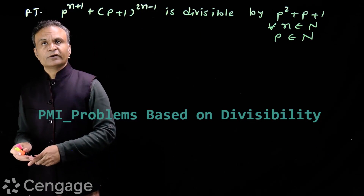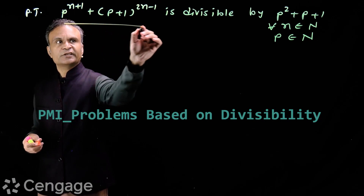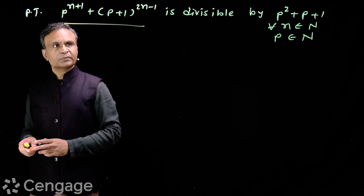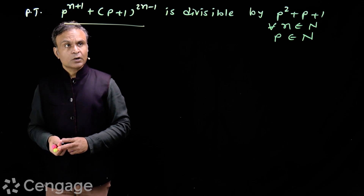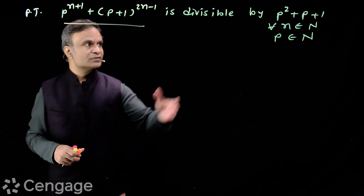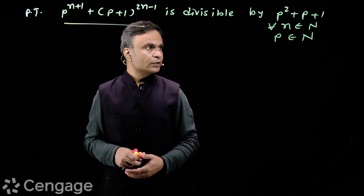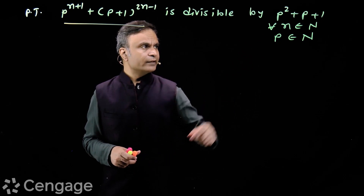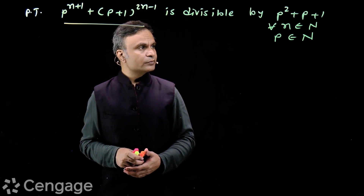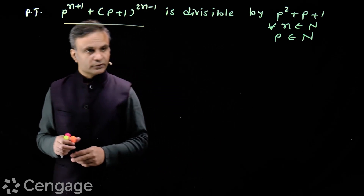Look at this question. We have to prove that this expression in p — p^(n+1) + (p+1)^(2n-1) — is divisible by p²+p+1, for all n belonging to the set of natural numbers, where p is also a natural number.